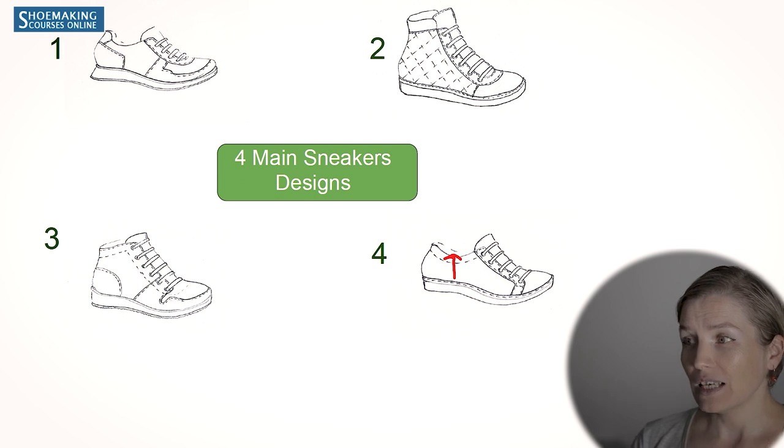The secret is to know how to create these four types of sneakers — derby construction with low top or high top, and Oxford construction with low top or high top. When you know all four of them — for example, how to create sneakers based on derby construction with high top, and how to create sneakers based on Oxford shoes with low top — you can mix them and create the other two types.